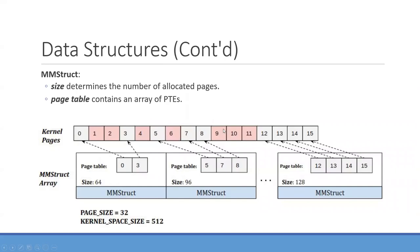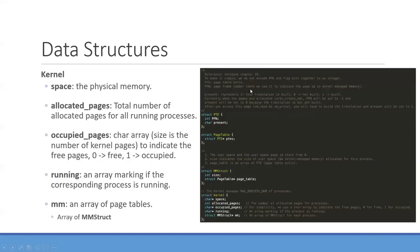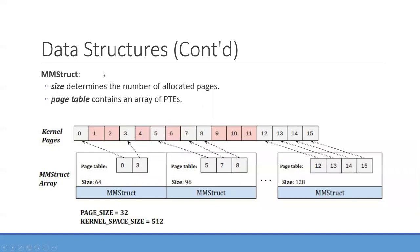Now we go into the detail of the mm_struct. Besides the mm_struct, we have the page table structure and the page table entry structure. For each page table entry, we have the page frame number and the present bit. The array of PTEs is the contents of the page table, and the page table list is the contents of the mm_struct. The mm_struct has a 'size' field that determines the number of allocated pages for one process, and a page table containing an array of page table entries.